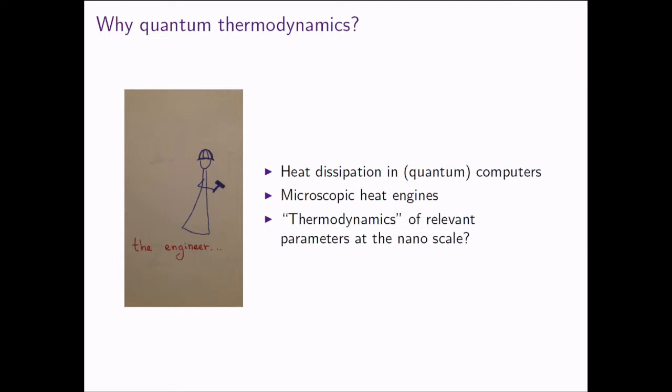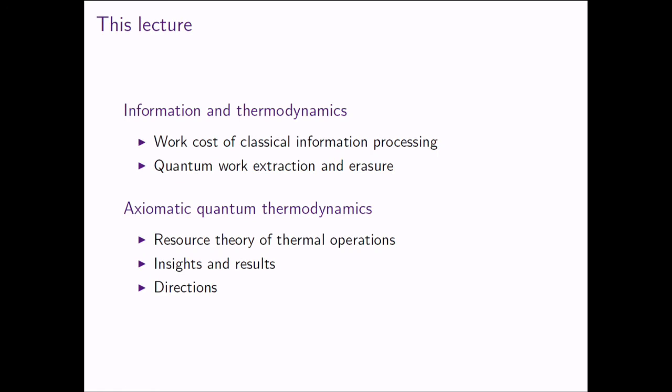In this talk, I hope to cover all three perspectives. We'll have three parts. In the first part, we'll talk about the relation between information and thermodynamics — work costs of erasure, the work value of information. We'll look at the classical case first to give intuition, then the quantum case. This gives us interesting results and phenomena, but not an overarching framework. That's what we'll see in the second part: axiomatic approaches to quantum thermodynamics, in particular resource theory approaches. We'll see what they tell us, why these principles are justified, and then talk about open questions.